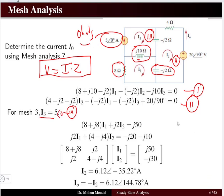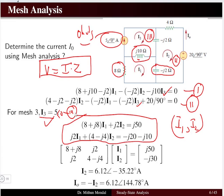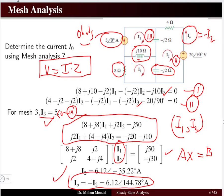We set up the system in the form AX = B where X contains I1 and I2. The final answer is I_0 = −I2. The method is the same as for DC circuits — the only difference is that we are now working in the phasor domain with polar coordinates and vector notation. All quantities have both magnitude and angle; we are dealing with vectors, not scalars.